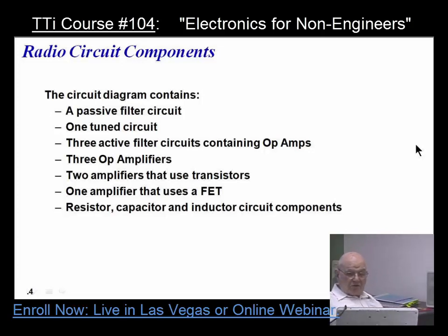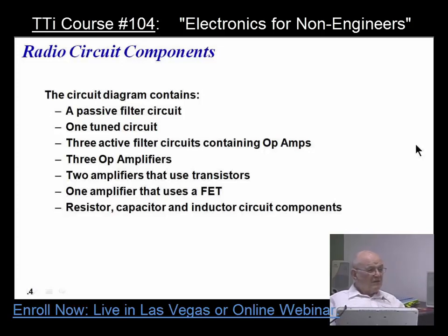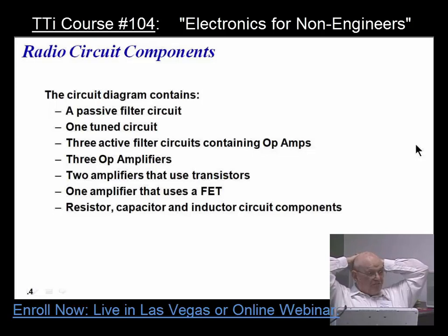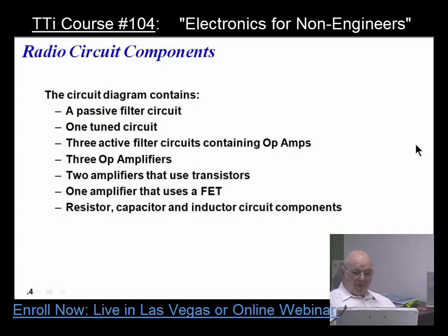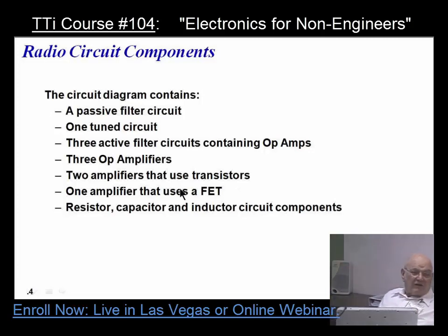Three active filter circuits containing op-amps. Why do we call it an active filter circuit? Because it has an op-amp — it could be transistors or a variety of different combinations. In fact, if you look at the internal circuitry of an op-amp, it has several transistors in it. Two amplifiers use transistors, one amplifier uses a FET — a field effect transistor. Why do you like to have a field effect transistor? High impedance. That's it.